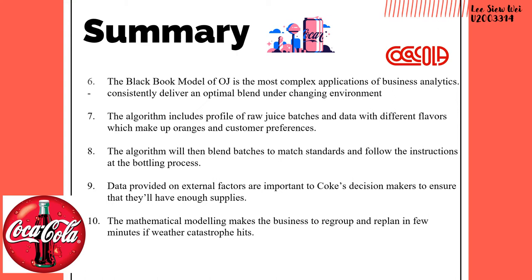Number six, the Black Book model for orange juice is the most complex application of business analytics, because it is needed to consistently deliver an optimal blend under changing environments. Number seven, the algorithms include profiles of raw juice batches and data with different flavors which make up oranges and customer preferences. Number eight, the algorithms will then blend batches to match standards and follow instructions at the bottling process. Number nine, data on external factors are important to corporate decision makers to ensure they will have enough supplies. Number ten, the mathematical modeling makes the business able to regroup and replant in a few minutes if there are weather catastrophes.